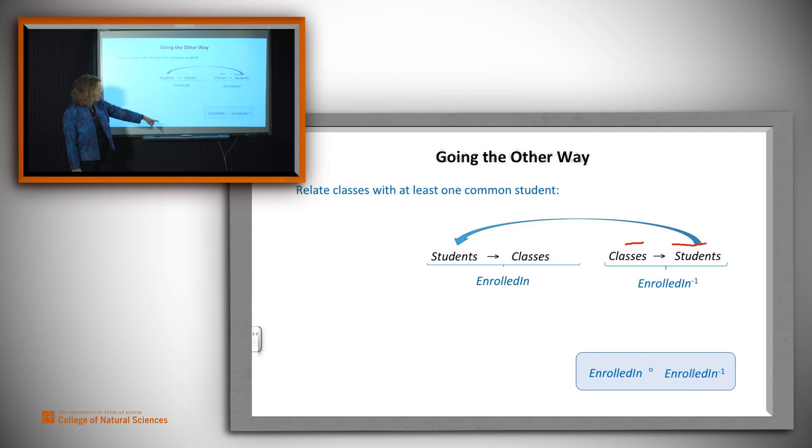So we write it this way: enrolled-in composed with enrolled-in inverse. And just quickly to run through the examples again, here's the little piece of the database that we've got. Let's see what we get now when we apply these relations in the opposite order. We're going to get elements like this.